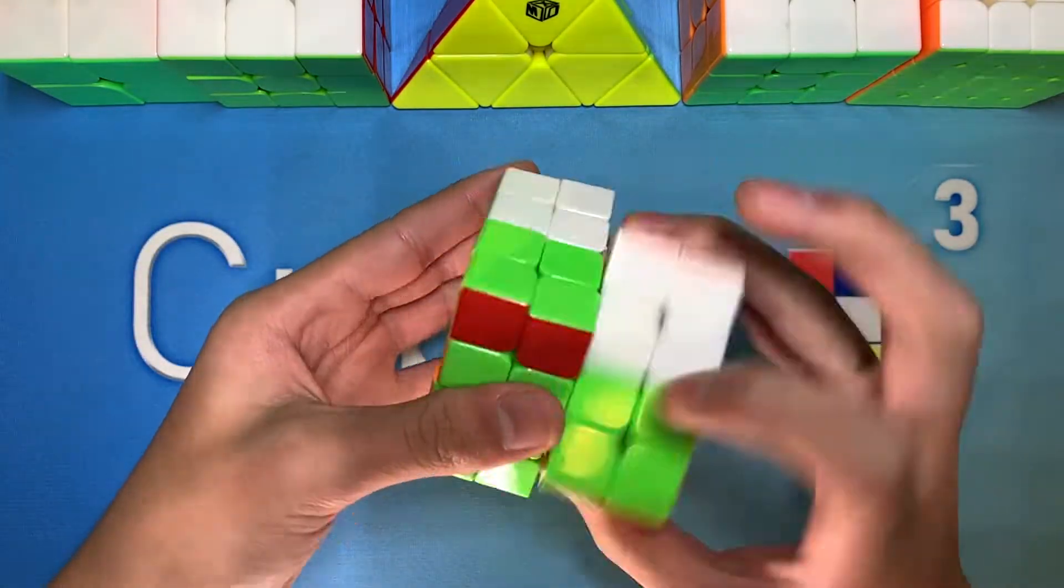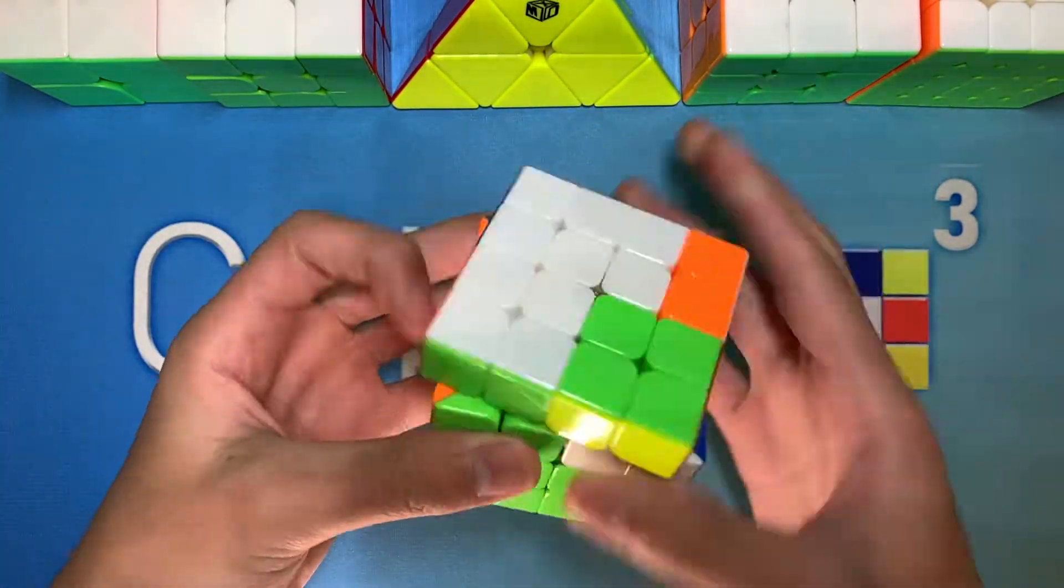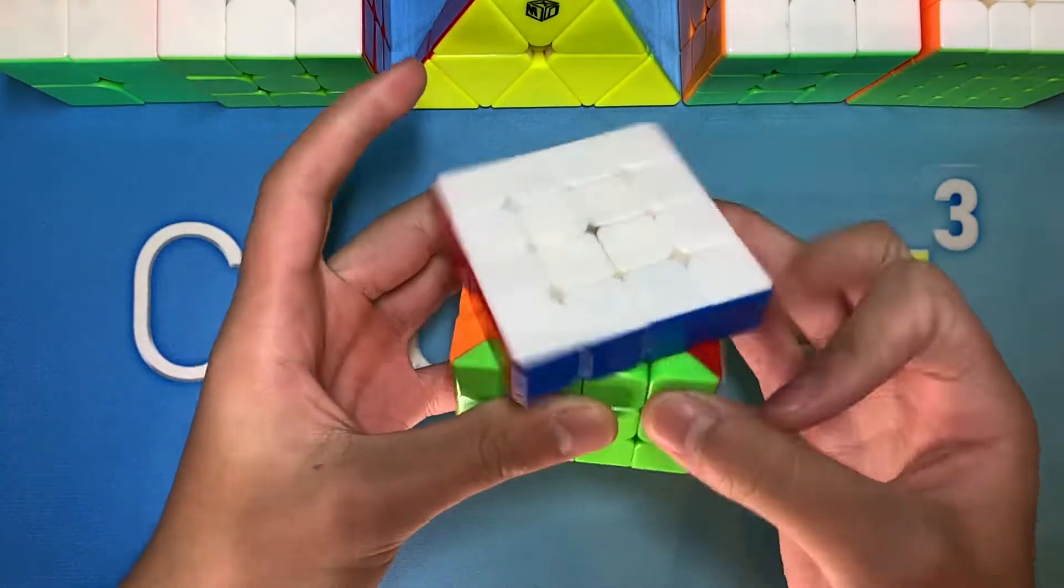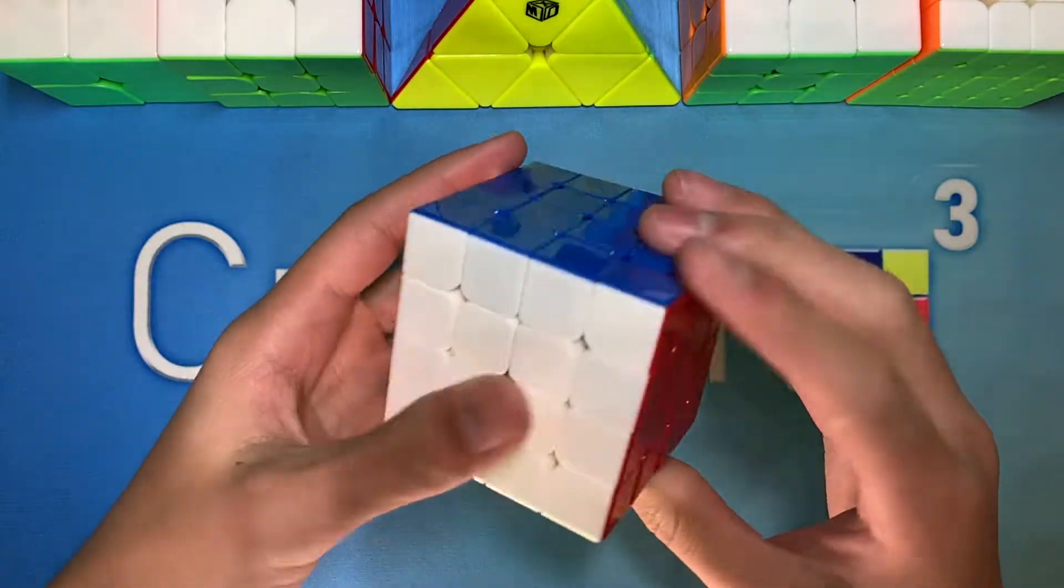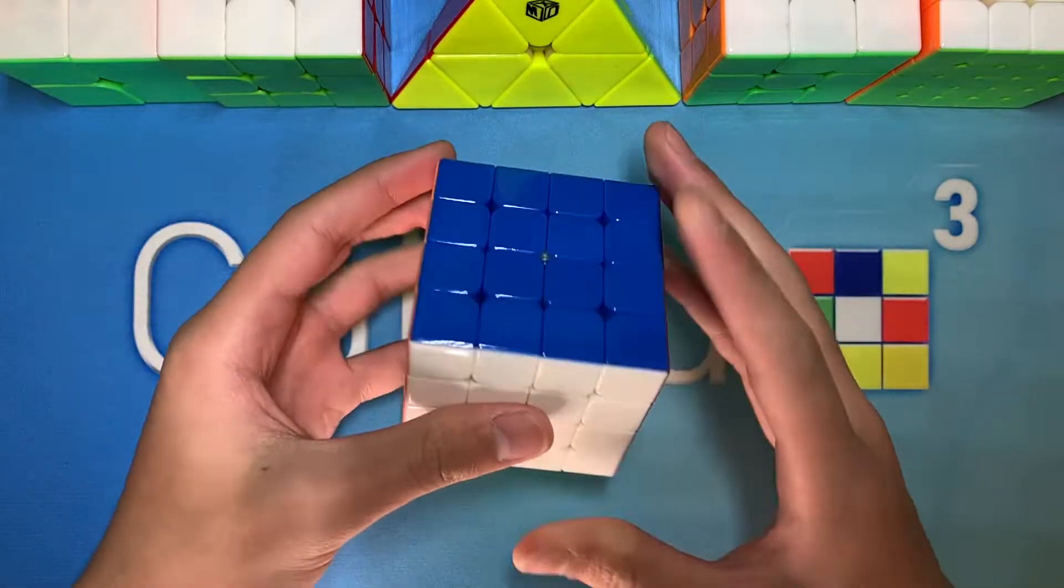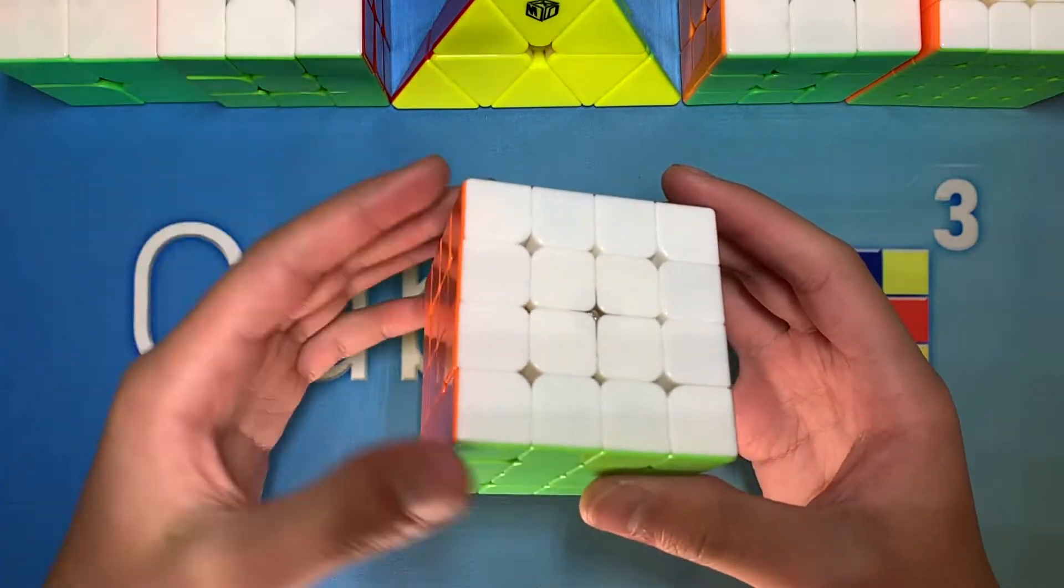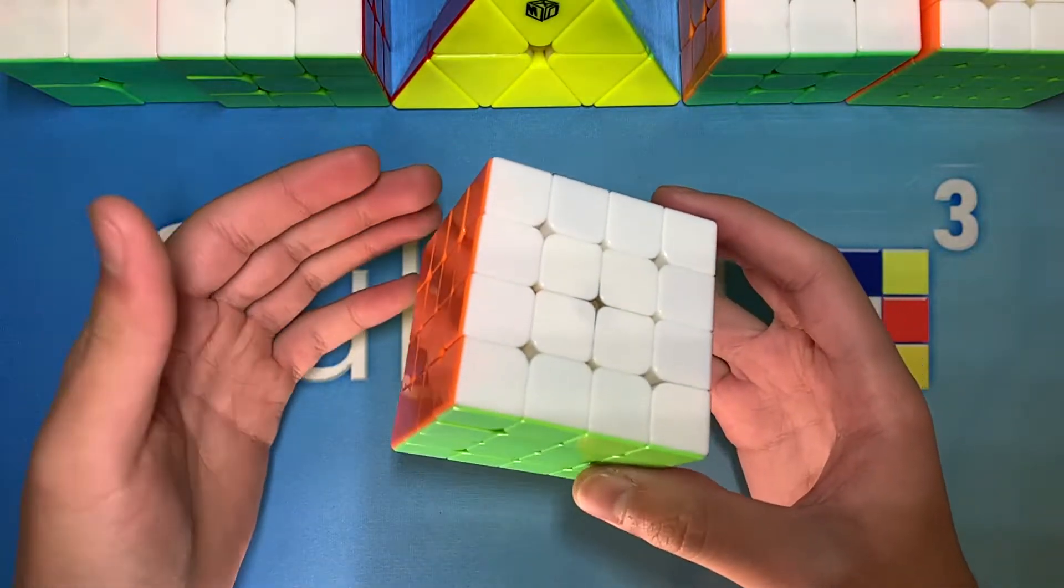The Mini Wuhua M actually solves both of these problems for me. The inner layer magnets are not as strong and overbearing as the Valk 4, and the color scheme is much more manageable for me. Also, I recently switched back to this cube during my practice at home, and I realized that I get much more consistent times on this cube, which is what I'm looking for in a competition.